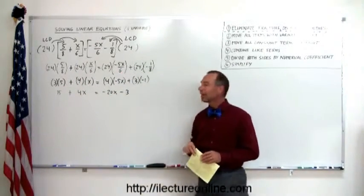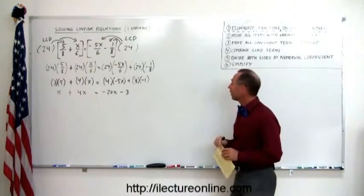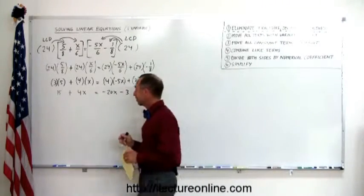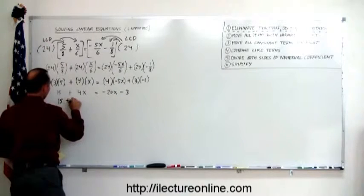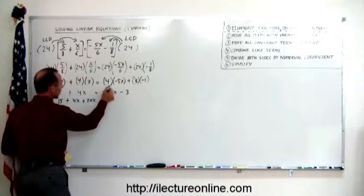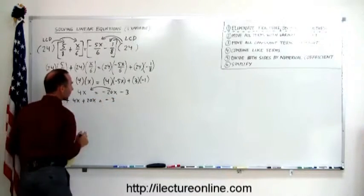And at that point we just continue following the steps. So step number two: move all the terms that have a variable to the left. So here we have 15 plus 4x plus 20x. Notice when we move the 20x over, that becomes a positive 20x equals. We still have the negative 3 on the right side.